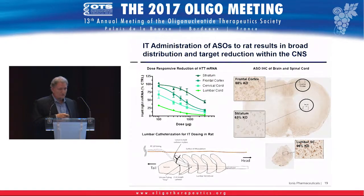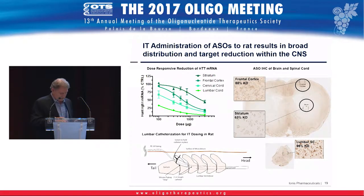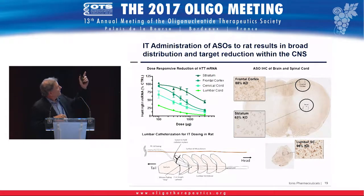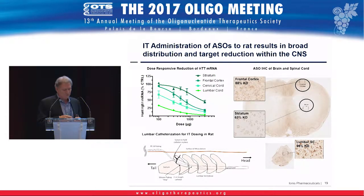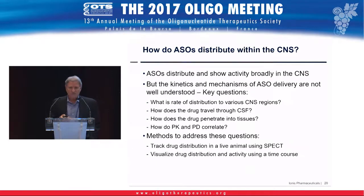This is histological work mapping distribution to regions of the brain and spinal cord as well as specific cell types. You can see really nice distribution to neurons in the lumbar spine, in the striatum, and even in the cortex — at just 24 hours after a single injection into the intrathecal space. Injection into the cerebrospinal fluid results in nice distribution throughout the CNS.